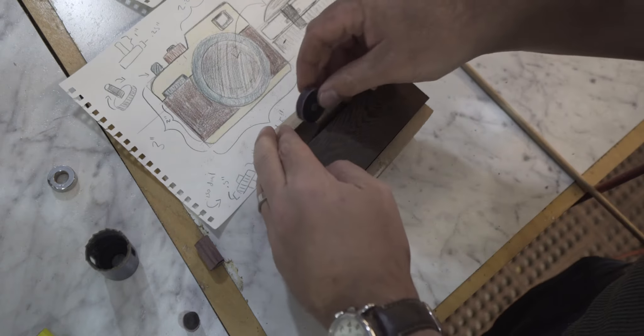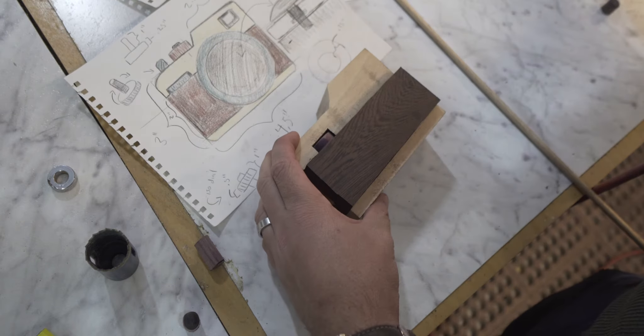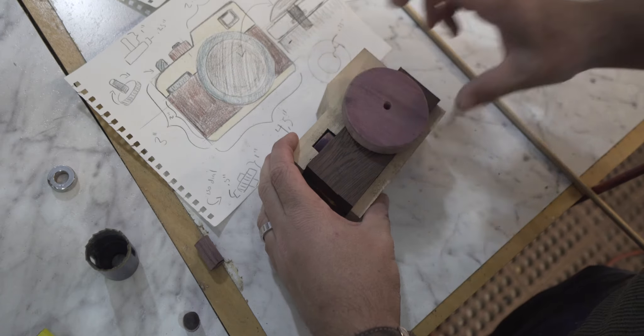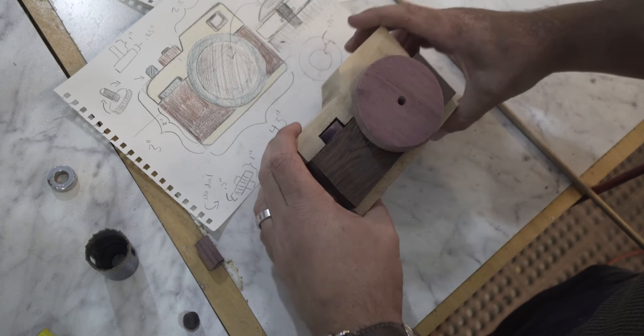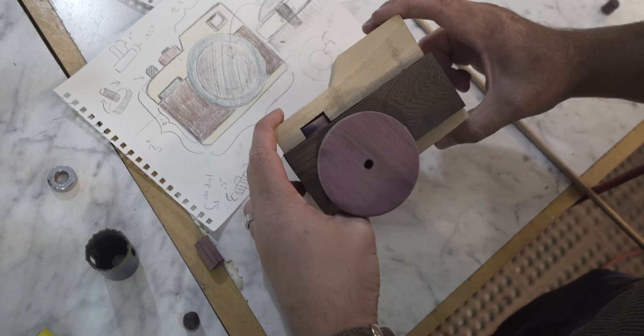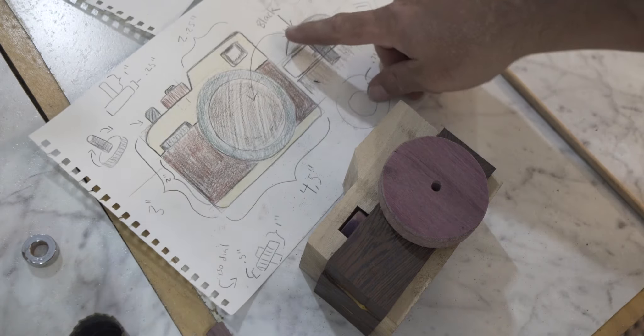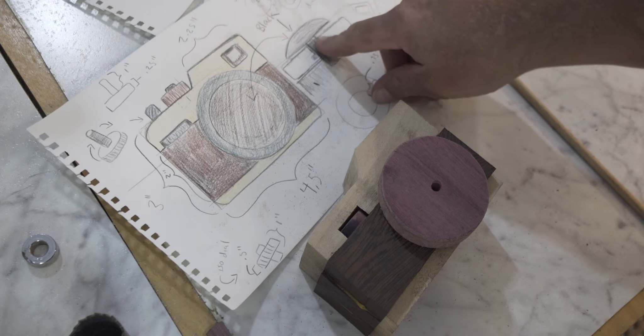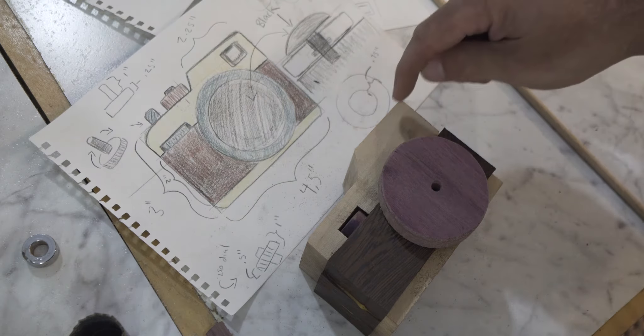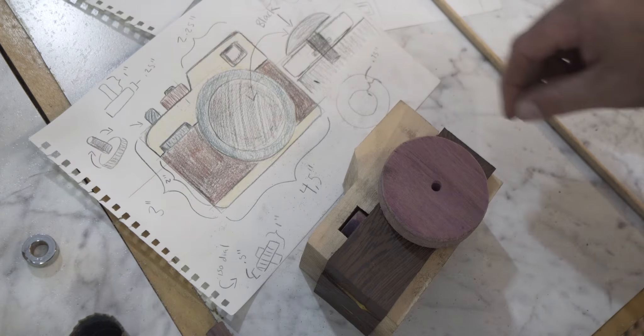Alright, let's put this in there. And it's starting to look like a cute little camera. I still have to make this part right here to go right there, and then I gotta cut this guy, cut a hole out there.